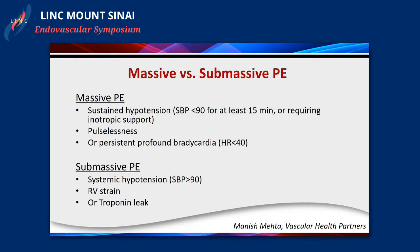Submassive PE by definition involves sustained hypotension - blood pressure less than 90 for at least 15 minutes, with or without inotropic support. We prefer going down the path of reducing the clot burden so the strain on the heart can improve and pressures can improve, rather than starting inotropic support. Submassive PEs are without hemodynamic collapse but with RV strain, and it's somewhat dependent on troponin leaks and our ability to gauge how the patient is doing from tachypnea and oxygenation requirements.